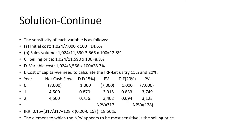The sensitivity of each variable is as follows. A. Initial Cost: NPV $1,024 ÷ Initial Cost $7,000 × 100 = 14.6%. B. Sales Volume: NPV $1,024 ÷ (Cash Inflows $11,590 − Variable Cost $3,566) × 100 = 12.8%.